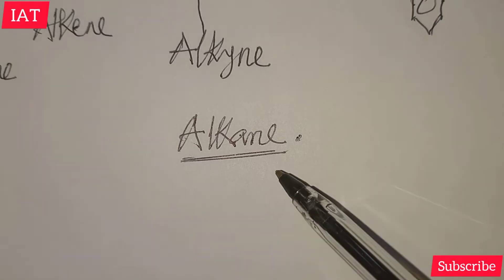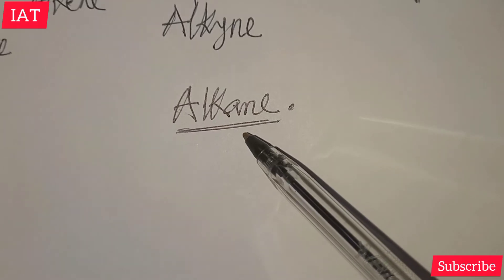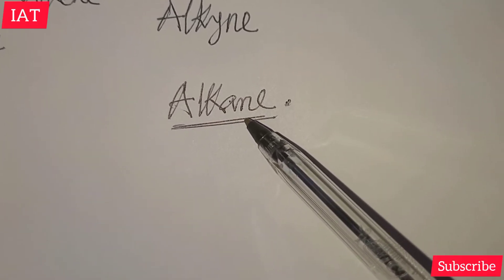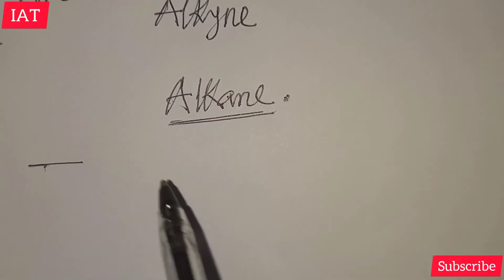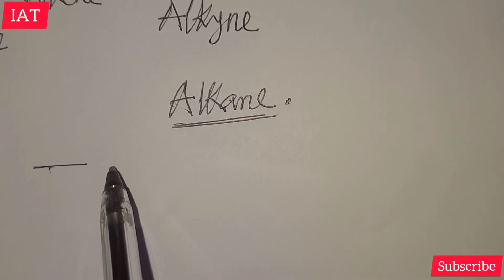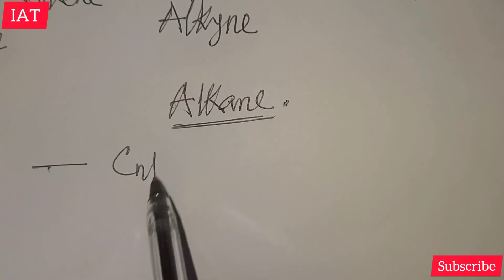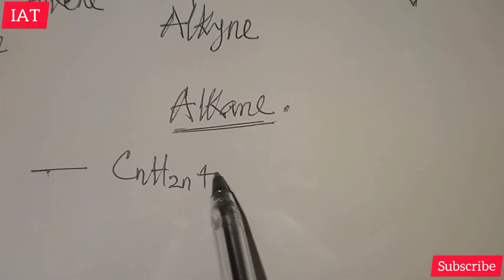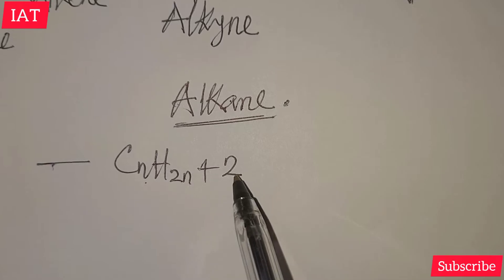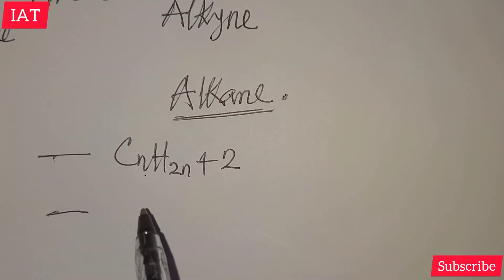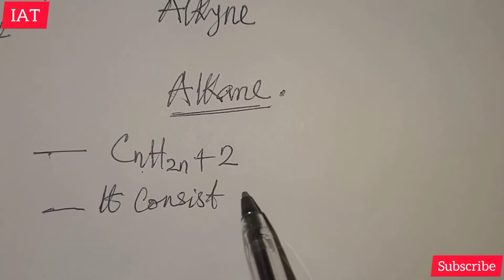Let's talk about the alkane class of aliphatic hydrocarbon. We will go straight to the necessary things useful in this tutorial. The first key property is that alkane has the general formula CₙH₂ₙ₊₂, and it consists of single bonds.